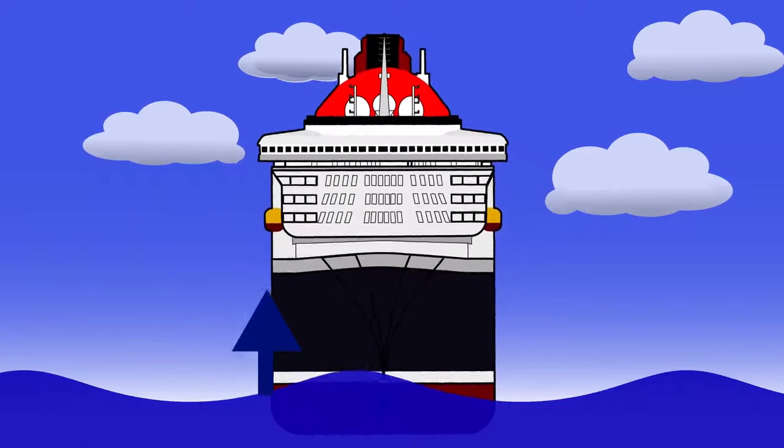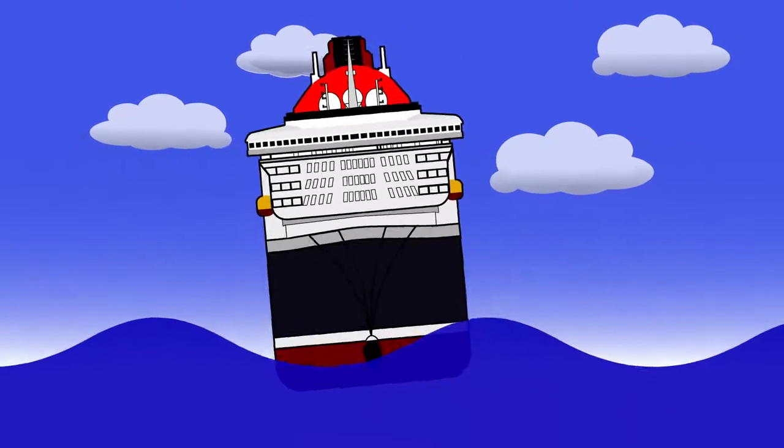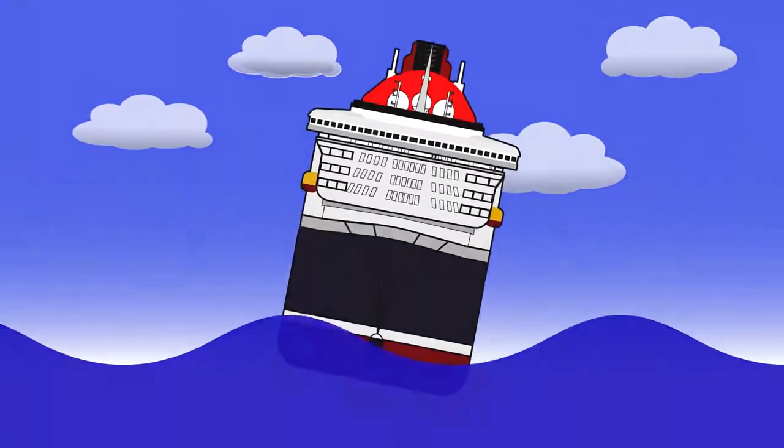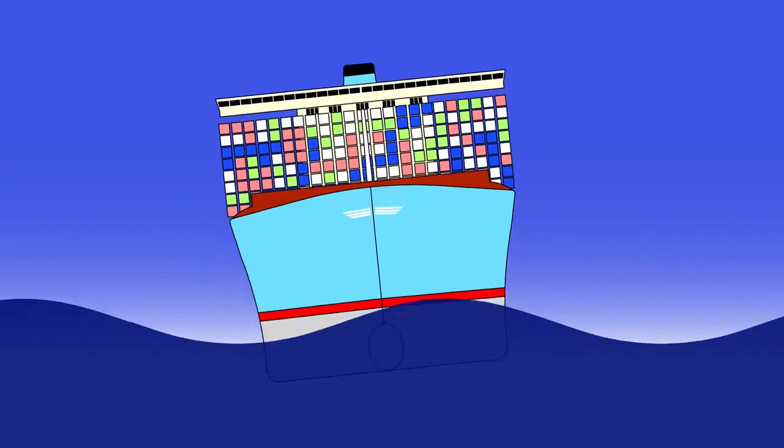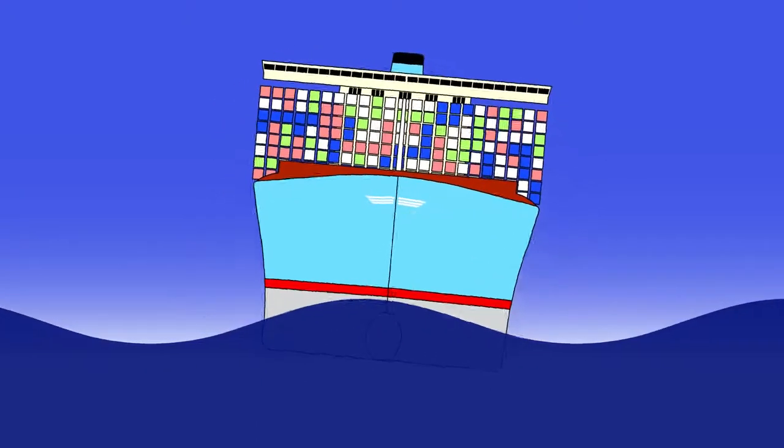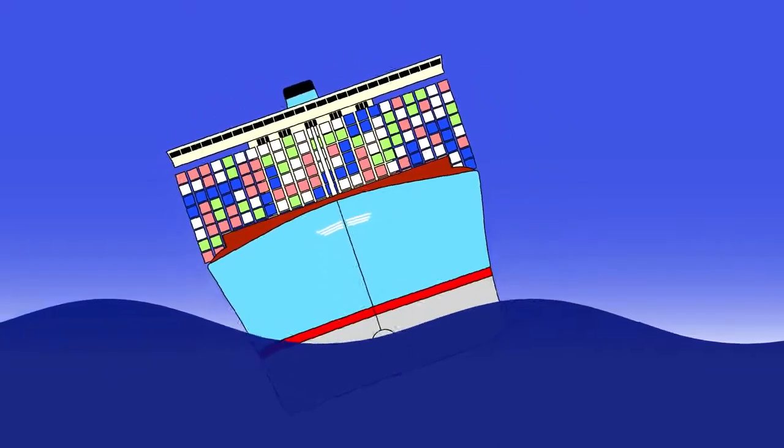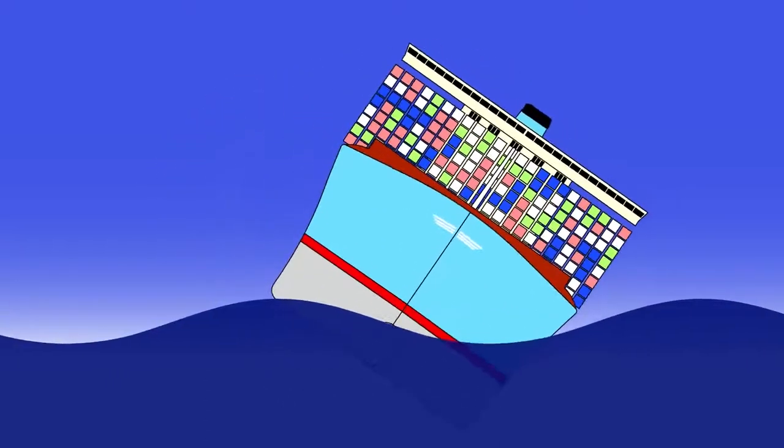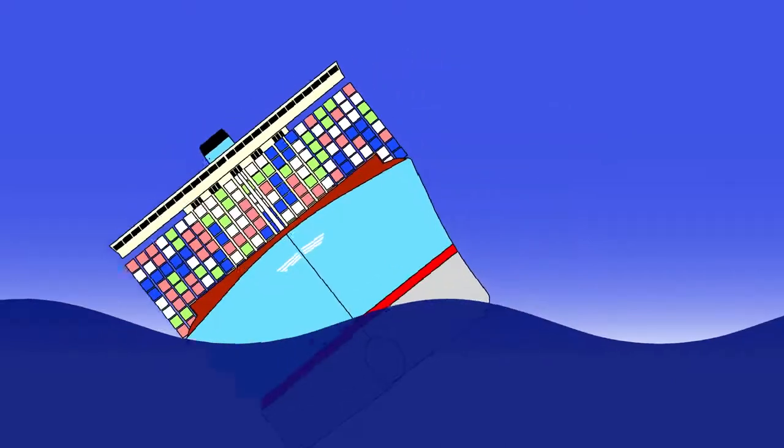Most of the time a ship will happily just continue riding the waves, rolling gently from side to side. The only exception of course is synchronous rolling, and that's when the frequency of the wave matches the natural frequency of the ship's roll. This results in rapidly increasing angles of roll until the ship actually capsizes.